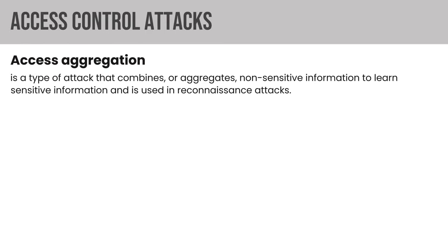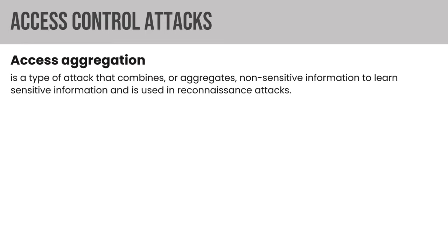An access aggregation attack combines or aggregates non-sensitive information to learn sensitive information — often used in reconnaissance. For example, a shipping clerk with access to individual order records but not total sales volume can aggregate those records to calculate that sensitive total. The key concept is combining non-sensitive data to arrive at sensitive information.